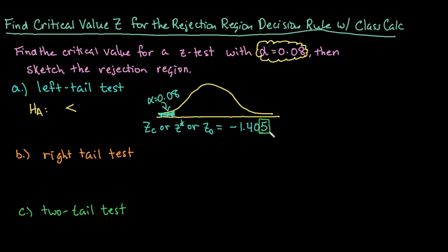So if I had a z score of, say, negative 1.75, negative 1.75 would fall to the left of that, so I would end up rejecting the null hypothesis. If I ended up with a z score of, say, negative 0.75, 0.75 does not fall in the rejection region, so I would fail to reject the null hypothesis. So that's how you use the rejection region to make your decision.